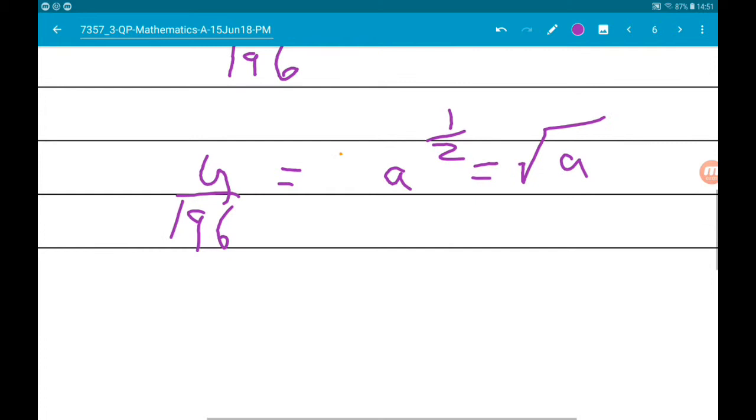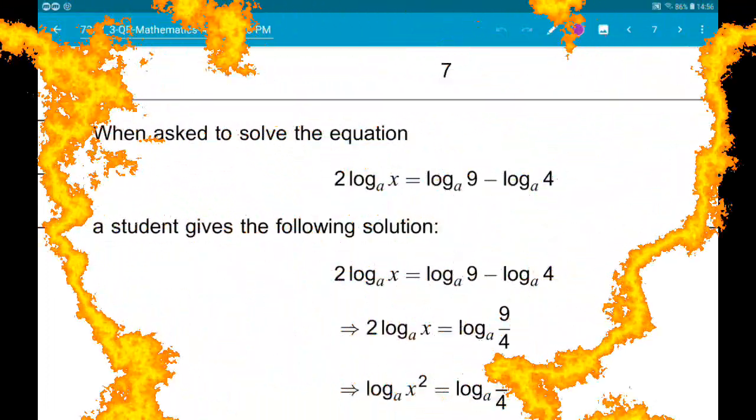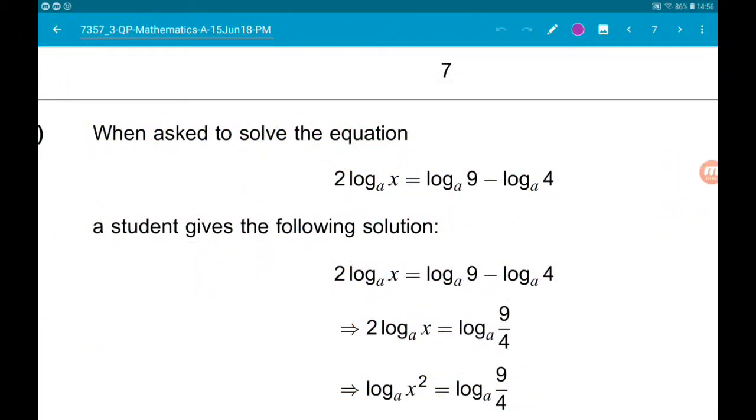And now we just multiply by 196, so y is 196 root a. Cool. Okay, then for part b.